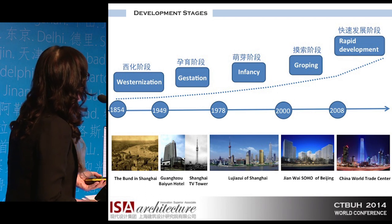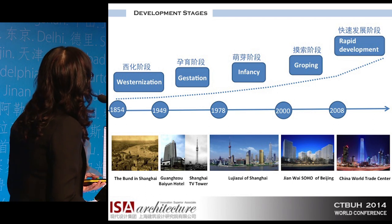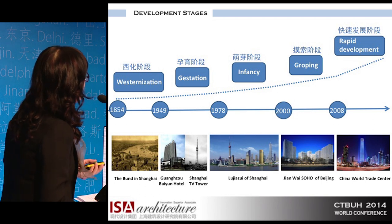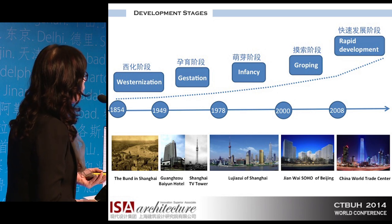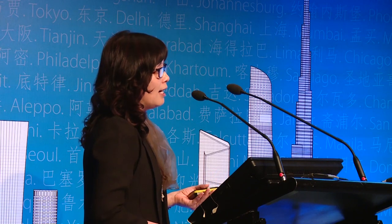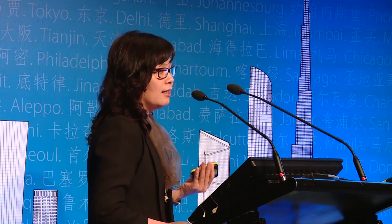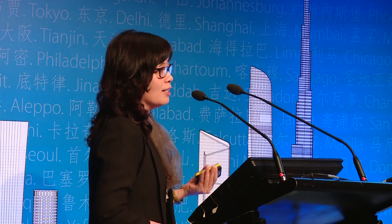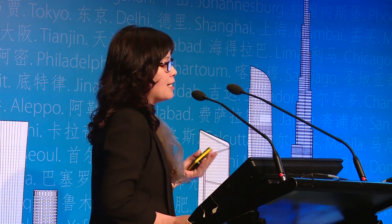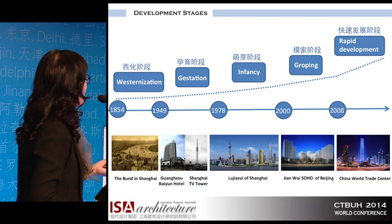We can look at the trajectory of the development of Chinese cities as they transitioned from horizontal sprawl to vertical development. We have five phases. The first stage started in 1854, trying to learn lessons from the Western world. We also have a gestation period, an exploratory stage, and a taking-off stage after 2008. In the 19th century, you look at the Bund in Shanghai and also Guangzhou's Baiyun Hotel. During the colonial period, there were already beginnings of high buildings, though back then high buildings were only about 80 meters — nothing compared to today's skyline. Those cities did go through phases of westernization, gestation, infancy, groping, and rapid development since 2008.